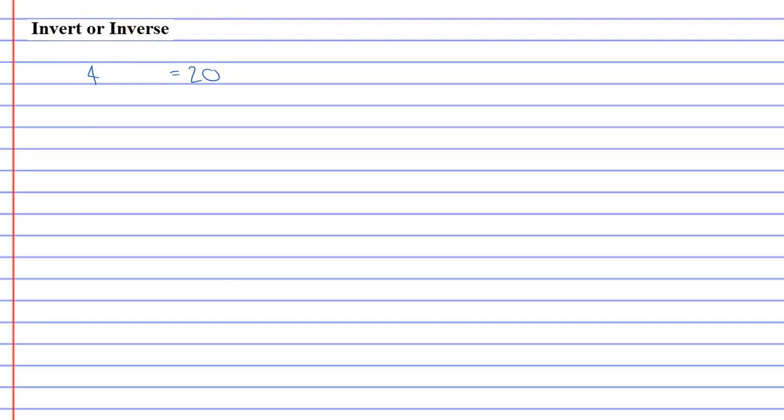One way is you could multiply it by 5 and the other way you could add 16. Now when we talk about inverse or invert, basically what we're saying is doing the reverse operation or doing the opposite operation.